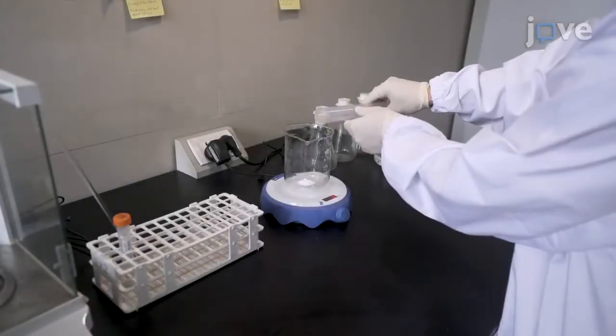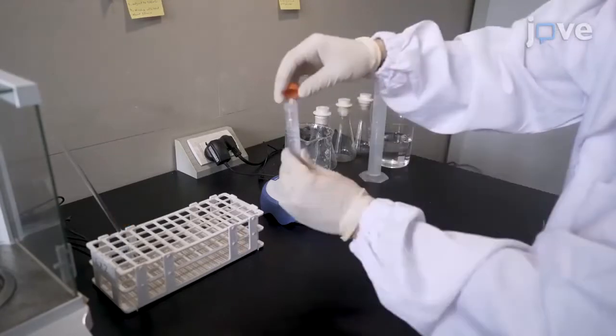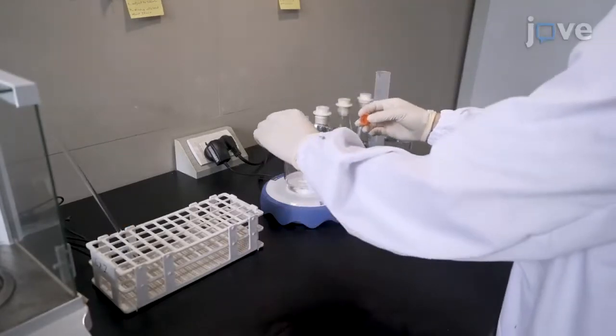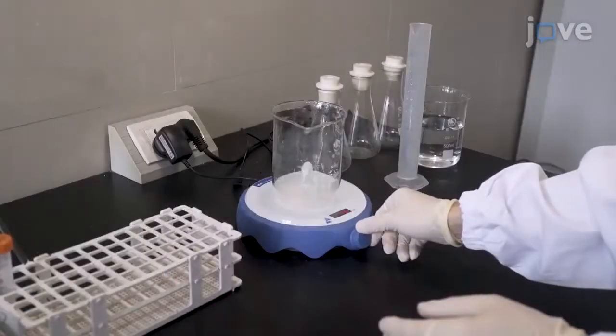First, dissolve BIF EPS and starch individually in hot water on a magnetic agitator to make both the concentration of 8 grams per liter.